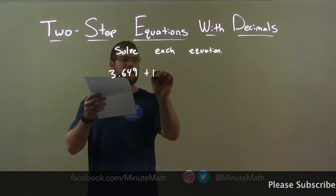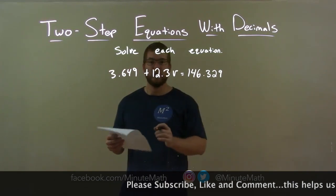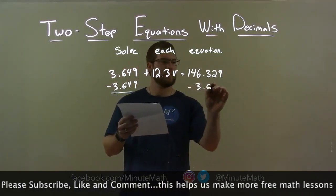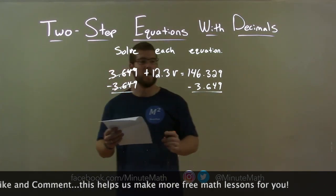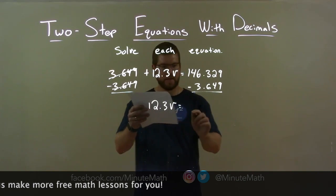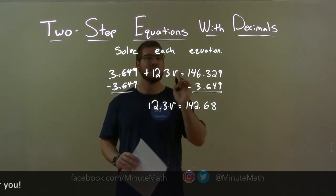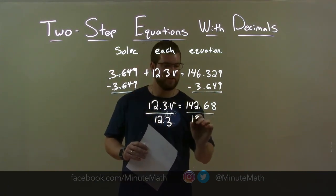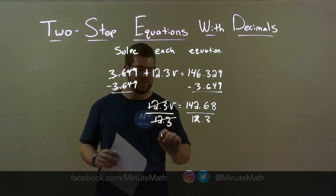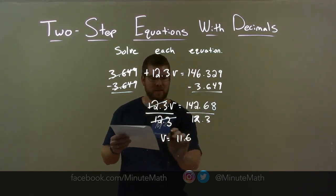3.649 plus 12.3v equals 146.329. I want to get v by itself. The first step is subtracting 3.649 from both sides. That eliminates the 3.649 on the left, leaving 12.3v by itself. Now 146.329 minus 3.649 is 142.68. I'm multiplying 12.3 times v — opposite of multiplication is division — so I divide both sides by 12.3. The 12.3 cancels, giving me v by itself. 142.68 divided by 12.3 is 11.6. And there we have our final answer.